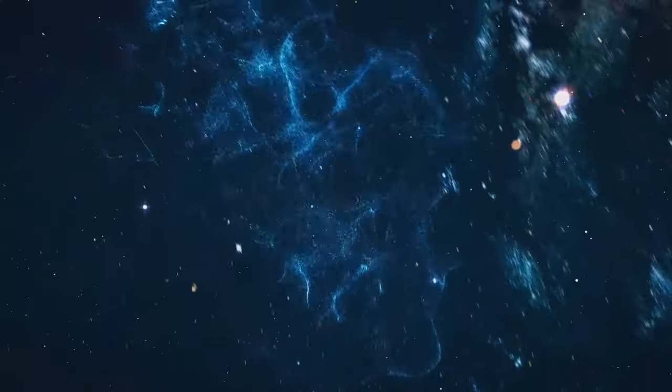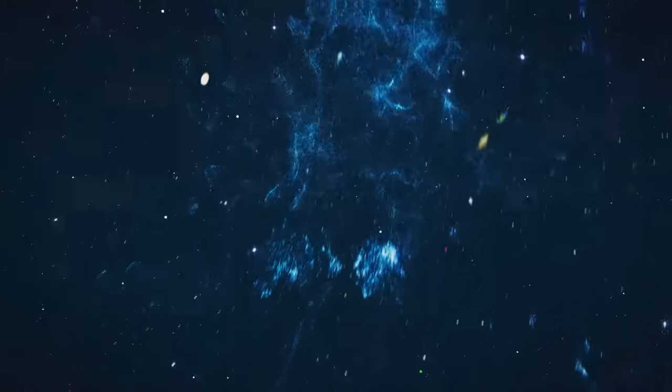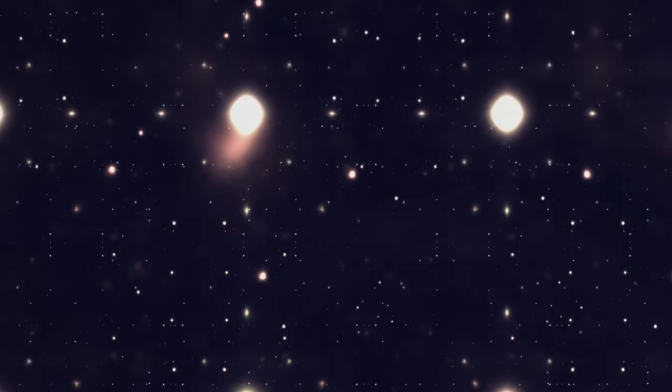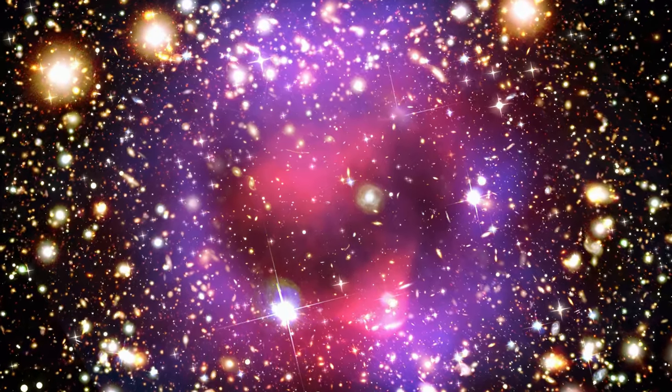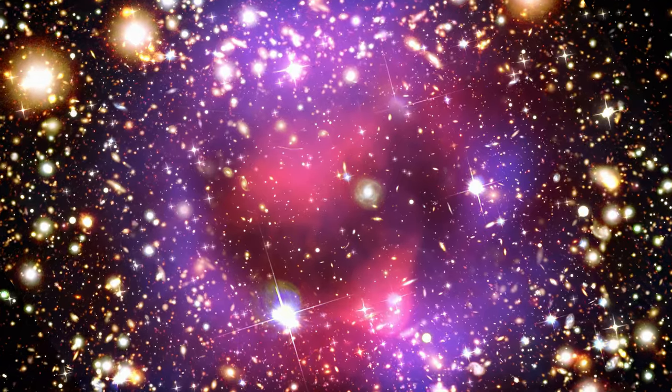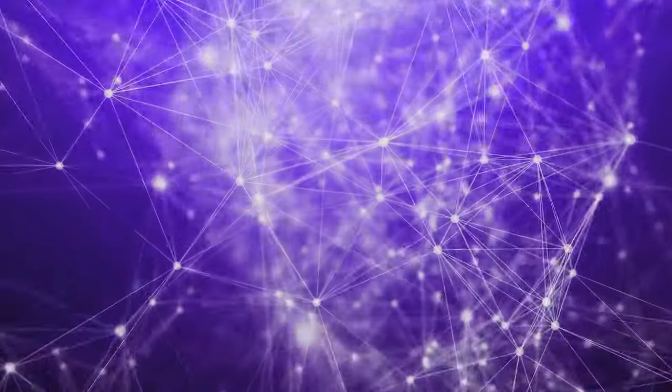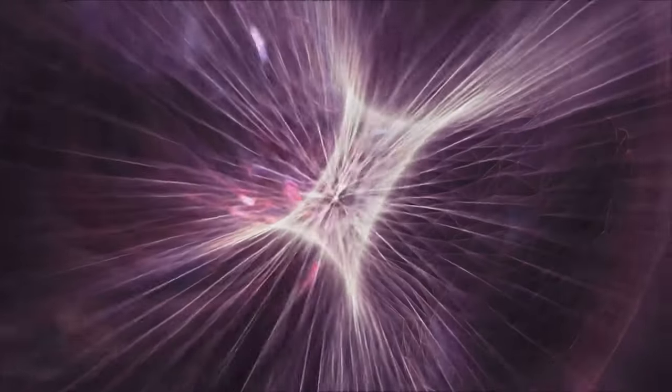When we look out into the universe, we see a vast expanse dotted with galaxies. But look closer and you'll find these galaxies aren't randomly scattered. They're connected by something called the cosmic web—filaments of dark matter and gas, invisible to the naked eye, acting as the threads.